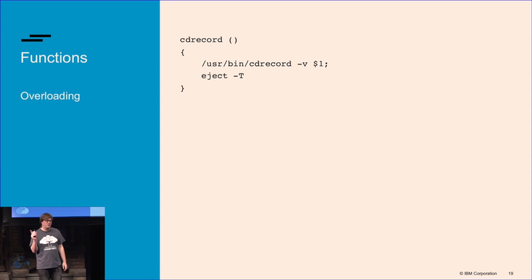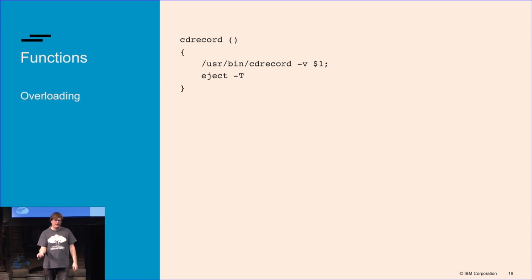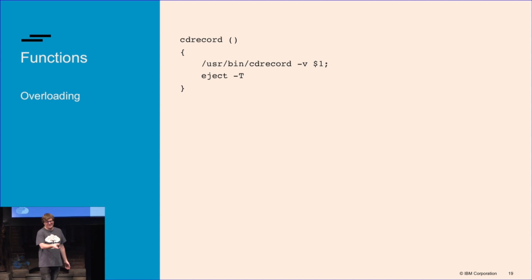In bash functions, you can also override commands that already exist, but in a function you have a lot more control. 'cdrecord' just records a CD in Linux, but it doesn't eject at the end. I think a CD burning program should eject when it's done — so it just runs cdrecord and then ejects at the end. That's kind of useful.